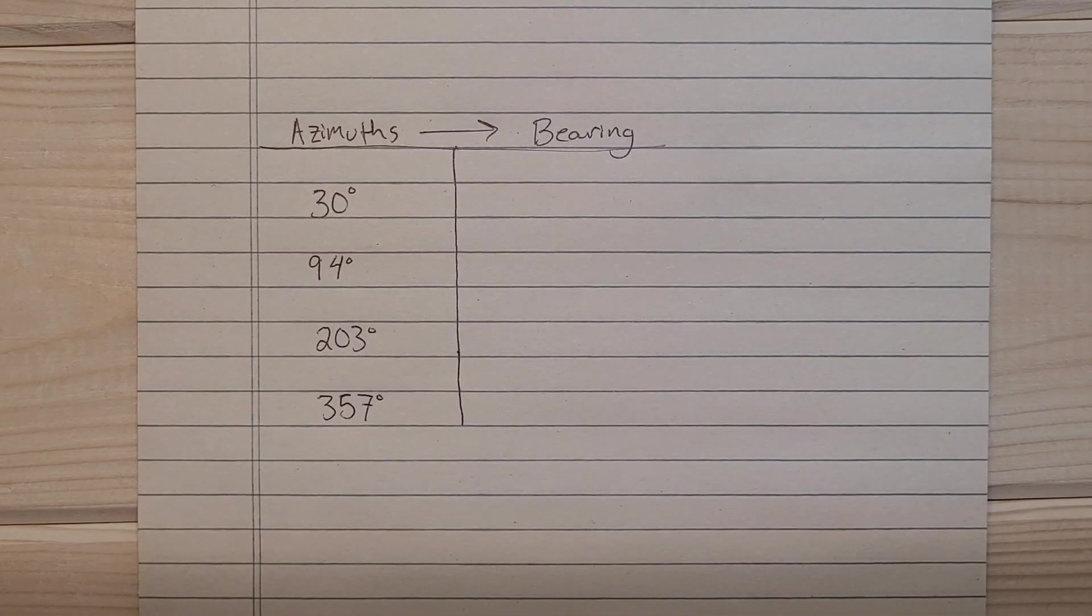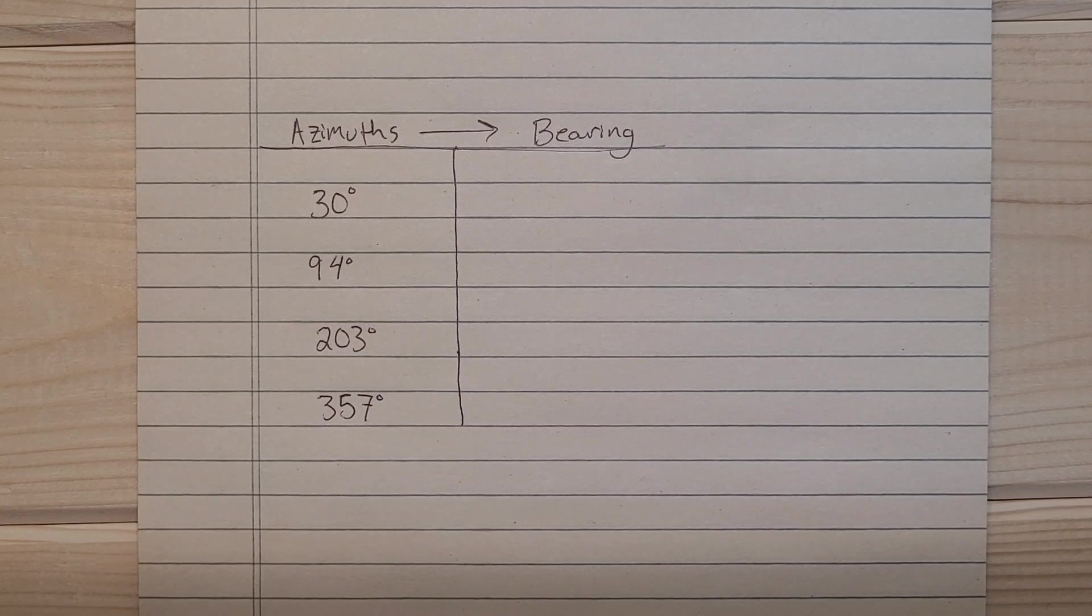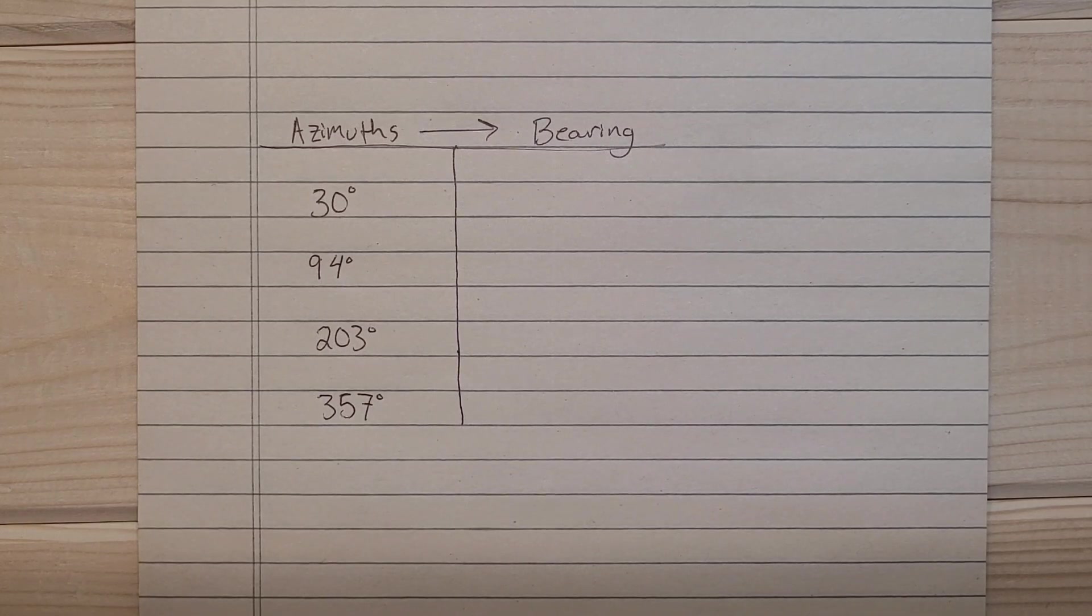Here are some azimuths: we have 30 degrees, 94 degrees, 203 degrees, and 357 degrees. If you guys want to go ahead and try to convert those into bearings, leave your answers in the comments and I'll let you know if you got it right.